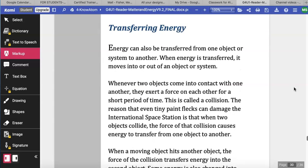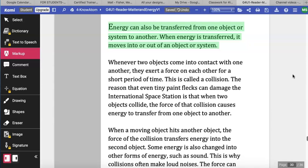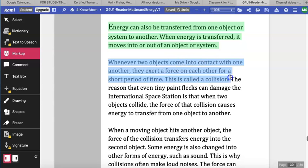Transferring energy. Energy can also be transferred from one object or system to another. When energy is transferred, it moves into or out of a system or an object. Whenever two objects come into contact with one another, they exert a force on each other for a short period of time. This is called a collision.